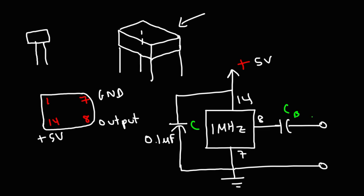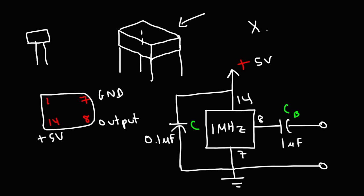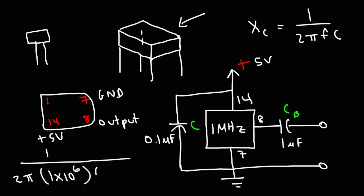For the output bypass capacitor, using a high-value capacitor won't make a difference — you can use one microfarad, ten microfarad, or even more, and it will still work. Because the frequency is relatively high, the impedance offered by this capacitor will be low. The capacitive reactance is one over two pi fc. At one megahertz using a one microfarad capacitor, the ten-to-the-six and ten-to-the-minus-six cancel, giving an impedance of 0.159 ohms — quite low. Using ten microfarads, the reactance drops to 0.0159 ohms.